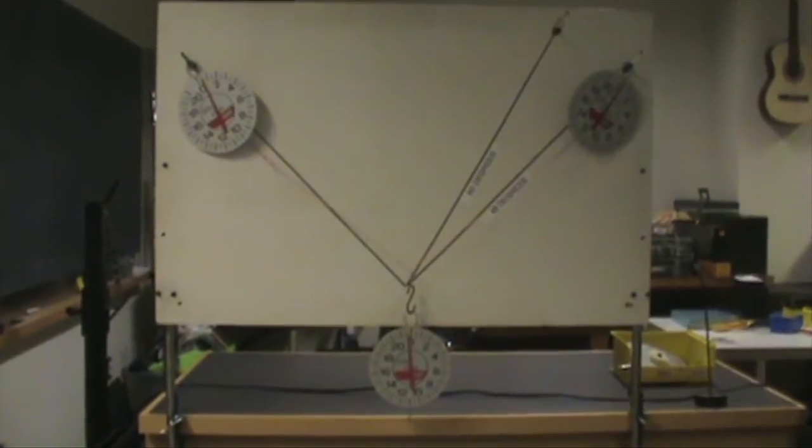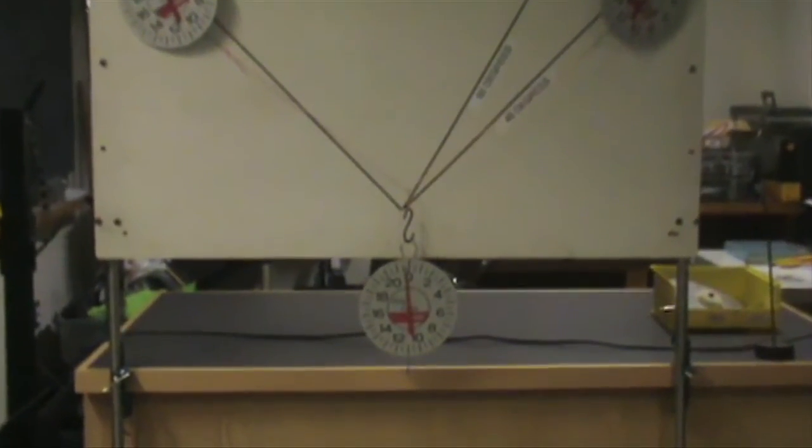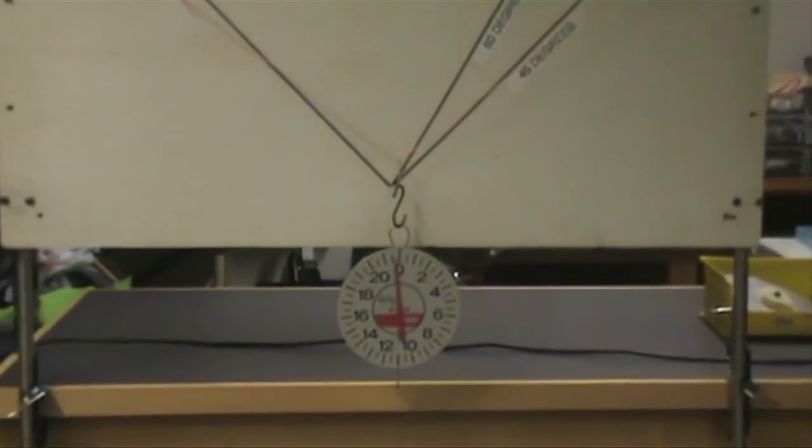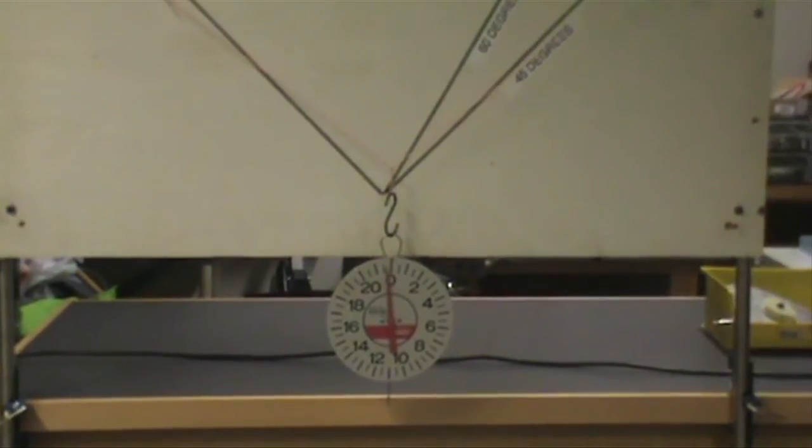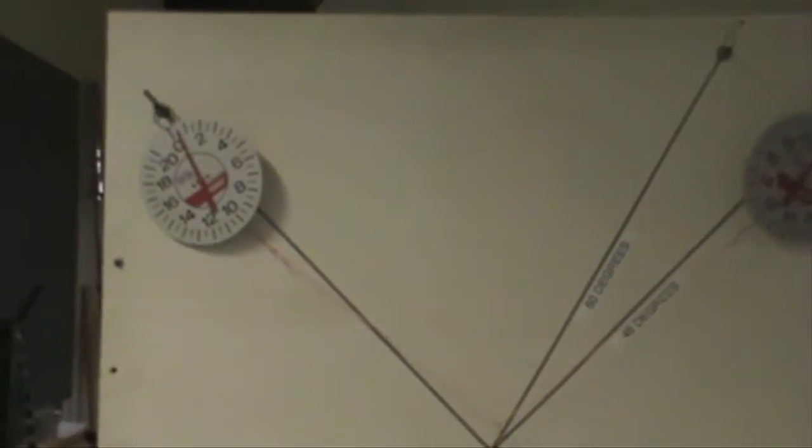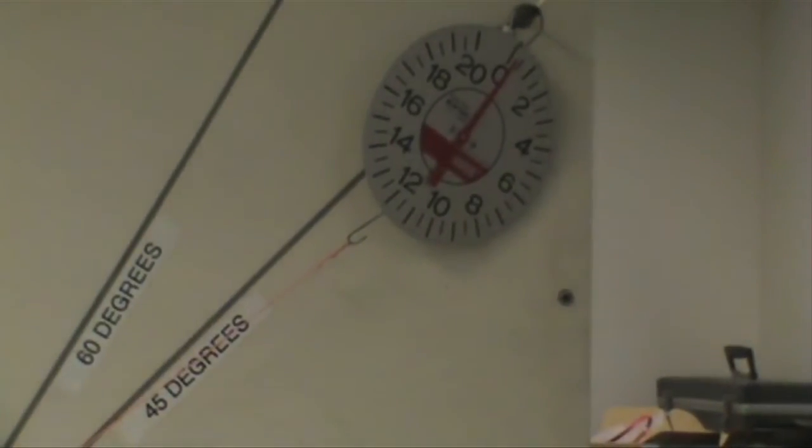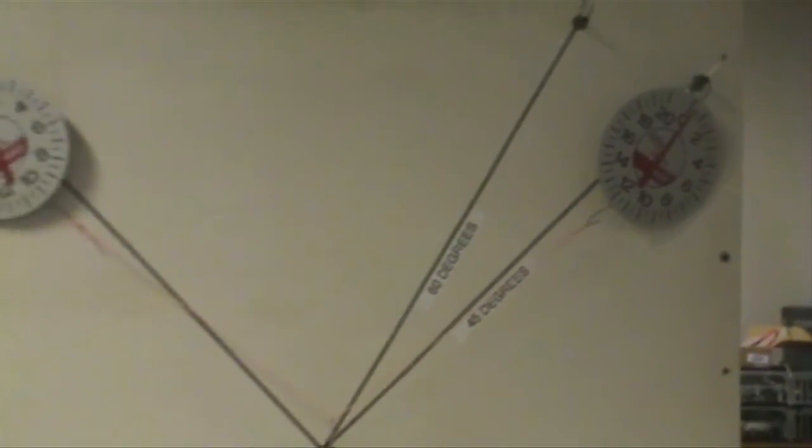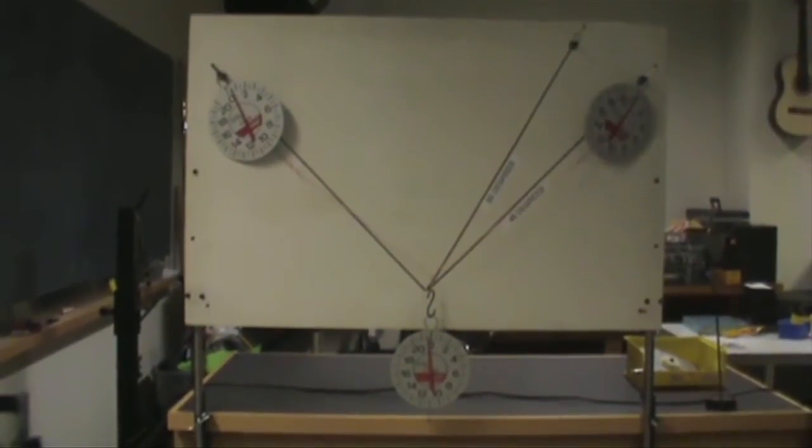We first want to get a reading of the scales while there is no mass added to the system. The scales do not have very precise measurement. We can only guarantee the measurement to within 0.5 Newtons. When looking at the bottom scale, we see that the reading is approximately negative 0.3 Newtons. The tension on string A is approximately 0.5 Newtons. And the tension on string B is 0.3 Newtons. These tension forces are due to the weight of the bottom scale and the strings. So we will need to subtract these amounts off of any reading when a mass is added into the system, so that we get the tension force of the mass alone.